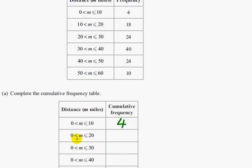Now greater than 0 up to 20 happened 4 times and 18 times. From 0 up to 20 we need to add the 4 and 18, so 22.